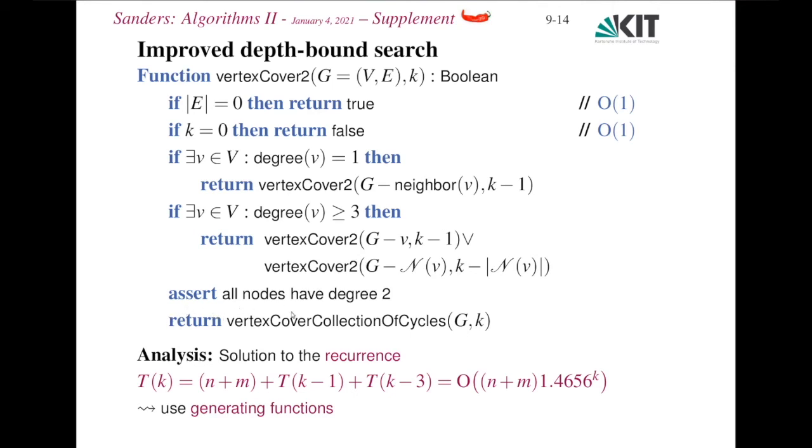When we get here we are in a situation where all nodes have degree zero or two. We have seen that this is a very simple problem that can be solved in polynomial time or actually in linear time. Maybe as an exercise think about how to implement this vertex cover for a collection of cycles.